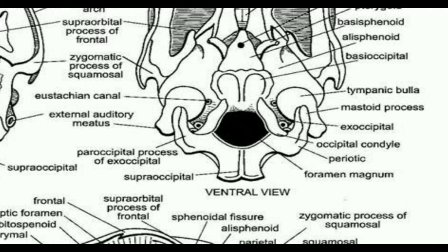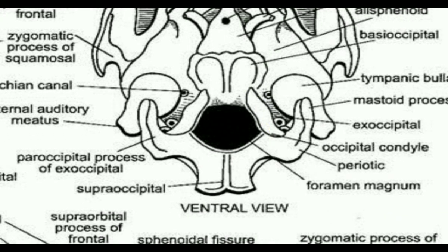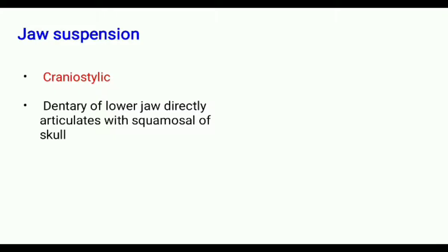Since there are two occipital condyles in the rabbit skull, the skull of rabbit is called a dicondylic skull. Next, the jaw suspension in rabbit is craniostylic.